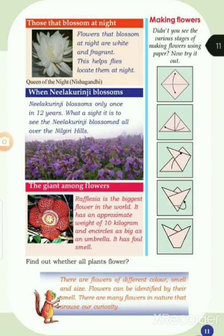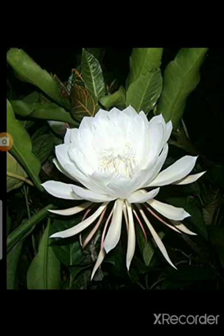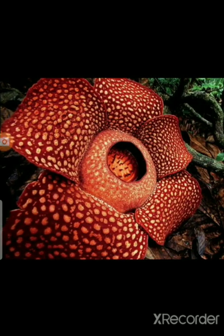The next picture — the giant among flowers. Rafflesia is the biggest flower in the world. It has an approximate weight of 10 kg. It has a foul smell — the most bad smell in the world. The pictures show: cune of the night, nishagandhi, nilakuranyi, and Rafflesia.